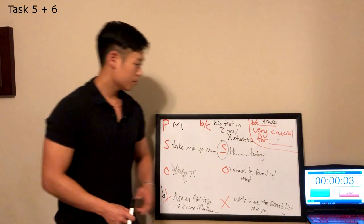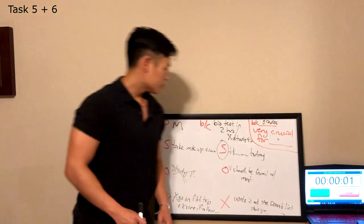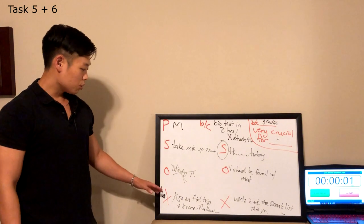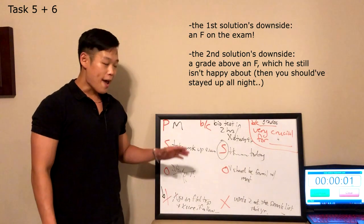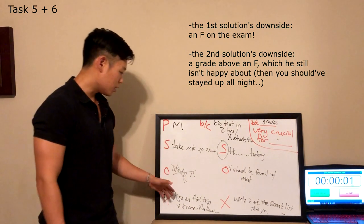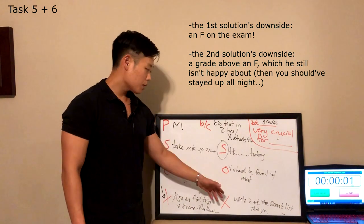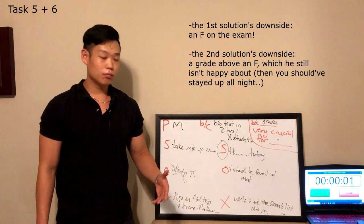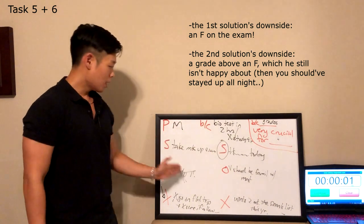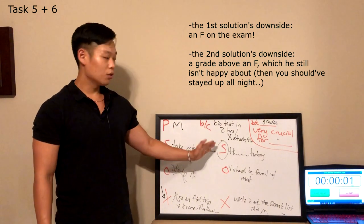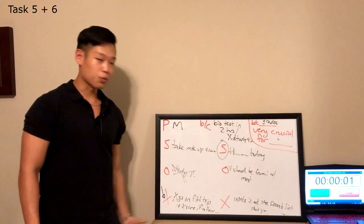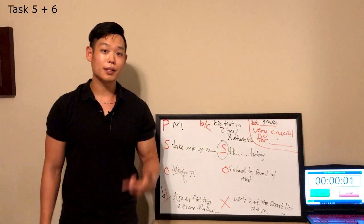All right, so clearly in this situation, the downside of the first solution is that he's going to get a zero, an F on this test. It's likely since he didn't go on the field trip. Now the downside of the second solution is that he might not get an A+, because he had something unfortunate happen to him last night. Obviously picking the second solution leads to the higher grade, which is why we're able to say this for this response. All right, now let's move on to Task 6.